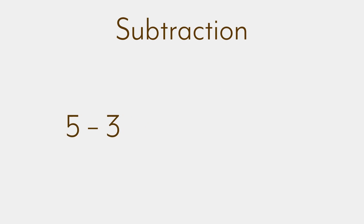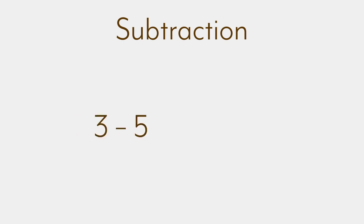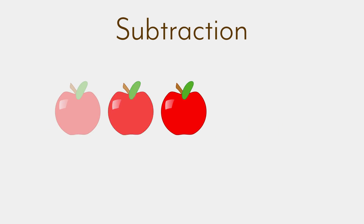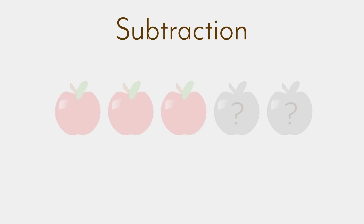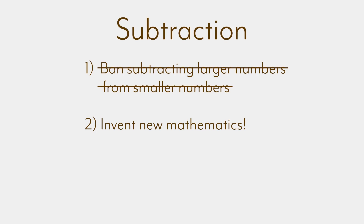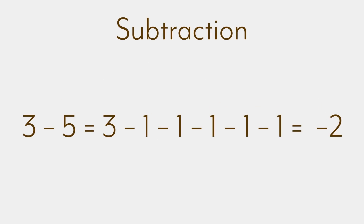Consider 5 minus 3. This says: starting with 5, count down 3, which leaves 2. Check. Does reversing the operations give the same answer? Nope. 3 minus 5 poses an interesting issue — if we start with 3, counting down 5 seems to make no sense. You can't get rid of 5 apples if you only started with 3. This leaves us with two choices: ban the situation, or invent new mathematics. In this case, we've already invented what we need — negative numbers from the integers. So we get negative 2. With negative numbers, we can count down as far as necessary to resolve any subtraction problem.